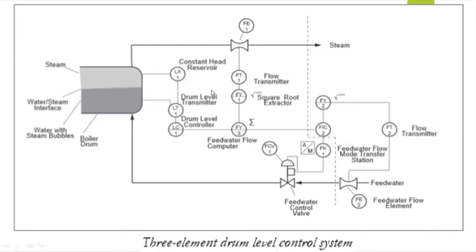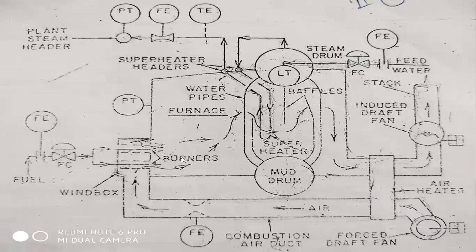This is a three-element drum level control system, where we maintain a constant head reservoir. We take the drum level control — accordingly we have the flow of steam going in, with a flow transmitter and flow relay. This entire signal is given to the feed water, and proportionately we are regulating the feed water given to the steam drum.